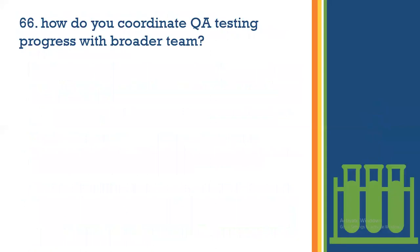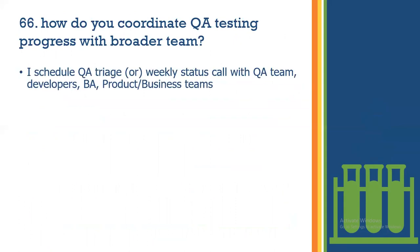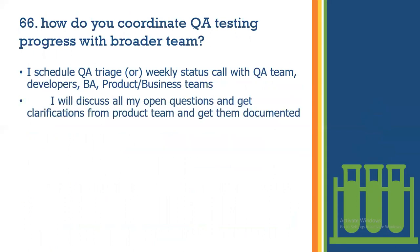How do you coordinate team progress with the broader team? I would do weekly status calls with the testing team, developers, business analysts, and product or business teams. I will discuss all open questions, get clarification from the product team, and get them documented. As a test engineer, we participate in scrum meetings where we discuss doubts about requirements and get clarification from the product team.